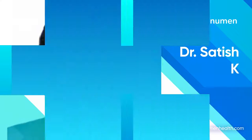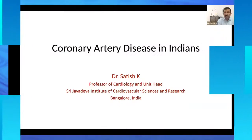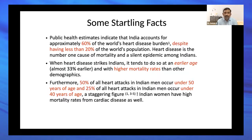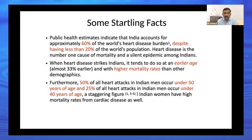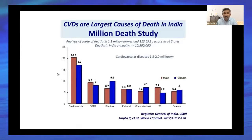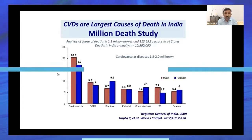I want to discuss how CAD is different in Indians. Estimates indicate India accounts for approximately 60% of the world's heart burden despite having less than 20% of the world's population. It tends to occur earlier in Indians compared to the western population and with higher mortality rates. As you can see here, the majority of deaths in this million death study was because of cardiovascular disease, much more than cancers and infective causes of death.